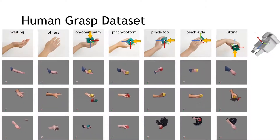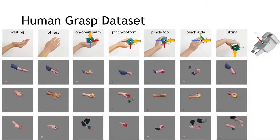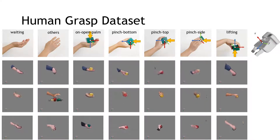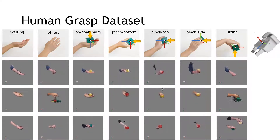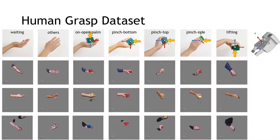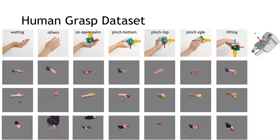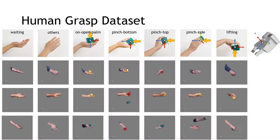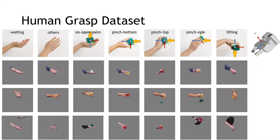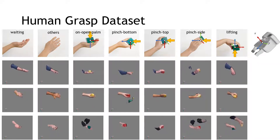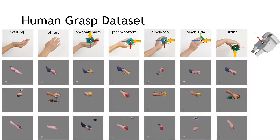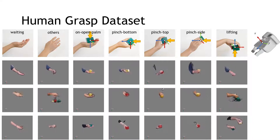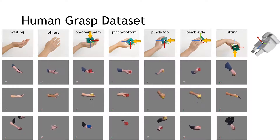To facilitate training, we collected a dataset which covers eight subjects with various hand shapes and poses using an Azure Kinect RGBD camera. An example image of a hand grasp is demonstrated to the subject, and we recorded the subject performing similar poses for 20 to 60 seconds.